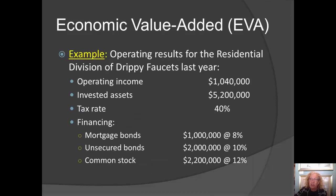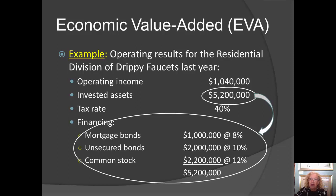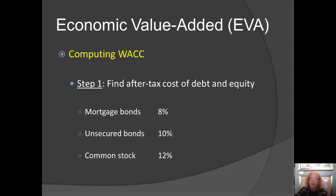We have some information about the residential division of Drippy Faucets for last year. Let's see how we can use that information to determine the division's economic value added. We see that the firm has $5,200,000 of invested assets. Those assets came from somewhere — either from the firm's mortgage bonds, its unsecured bonds, or its stockholders' equity.